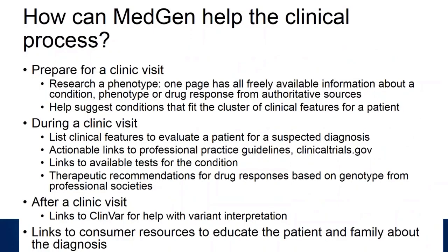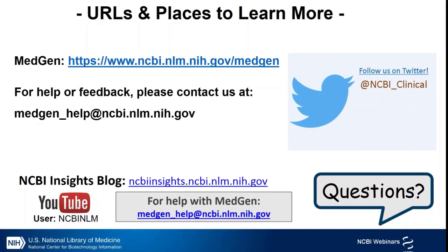In summary, you can use MedGen to research a phenotype and access all resources from one page — it can be your one-stop shop for genetic disease information. It can help suggest conditions that fit the cluster of clinical features for a patient, and provides a list of clinical features you can use to evaluate a patient for a suspected diagnosis. You can access practice guidelines for a condition as well as therapeutic recommendations for drug responses based on genotypes from various professional societies, links to available genetic tests to confirm diagnosis, links to ClinVar for variant interpretation, and links to consumer resources for patients and families. Please contact us with your feedback at the email on the slide — it's MedGen underscore help — and follow us on Twitter for updates. Thank you for your attention and enjoy MedGen.